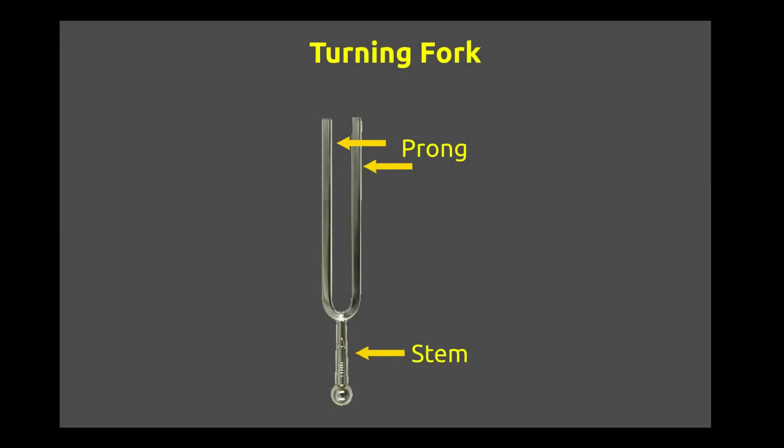Let's take an example of a sound producing tuning fork which is made of steel. The two upper ends of the tuning fork are called the prongs, while the lower end is called the stem.